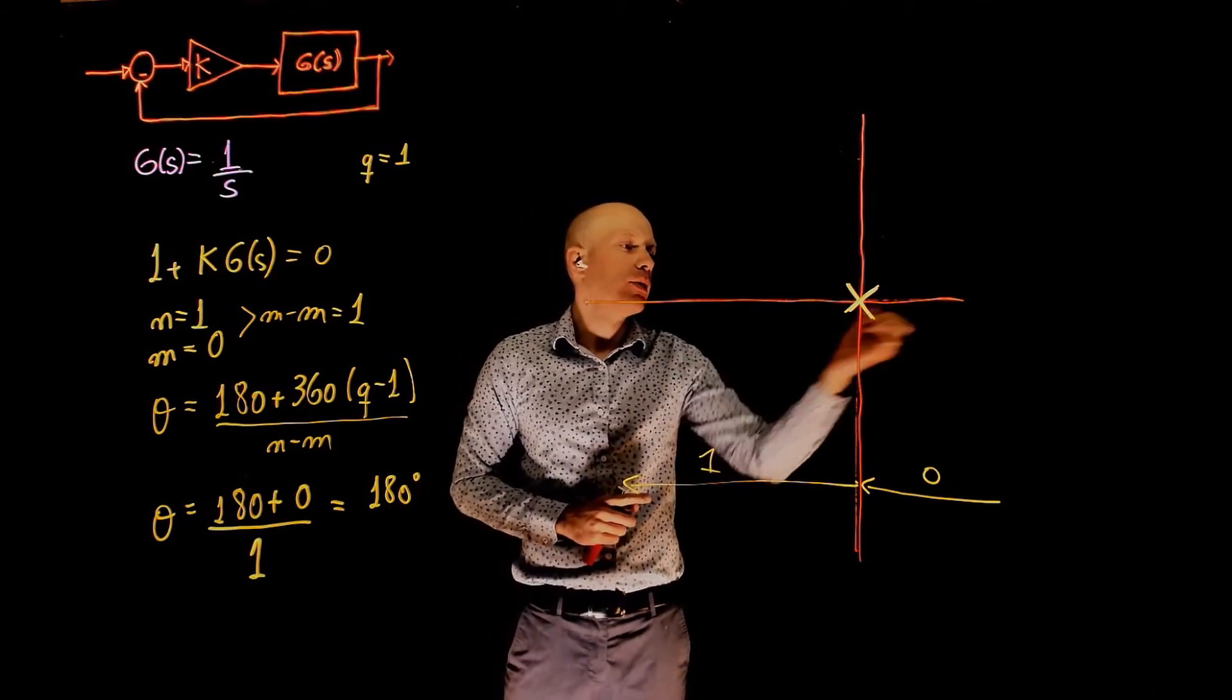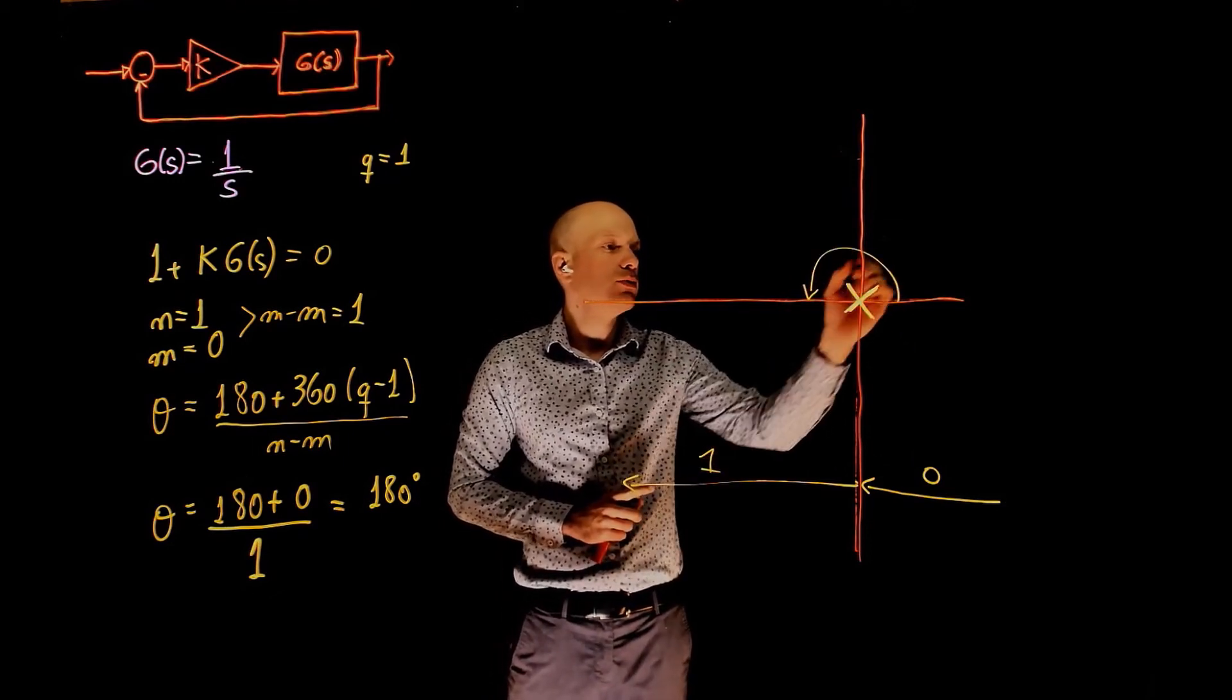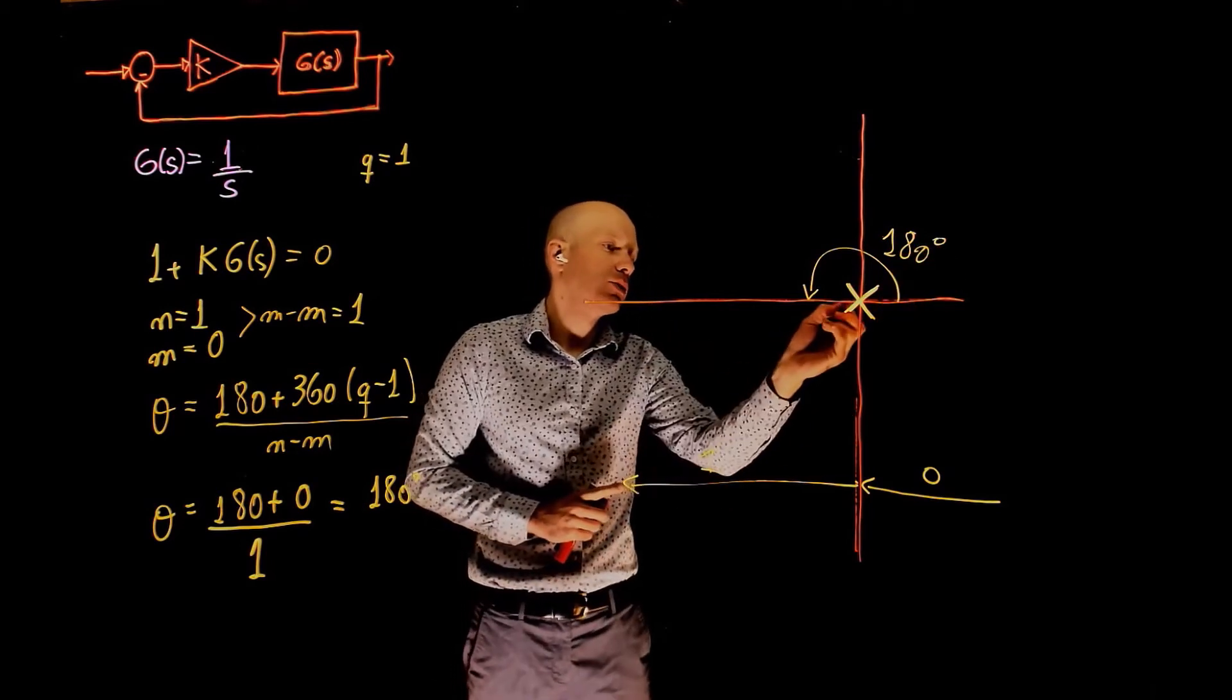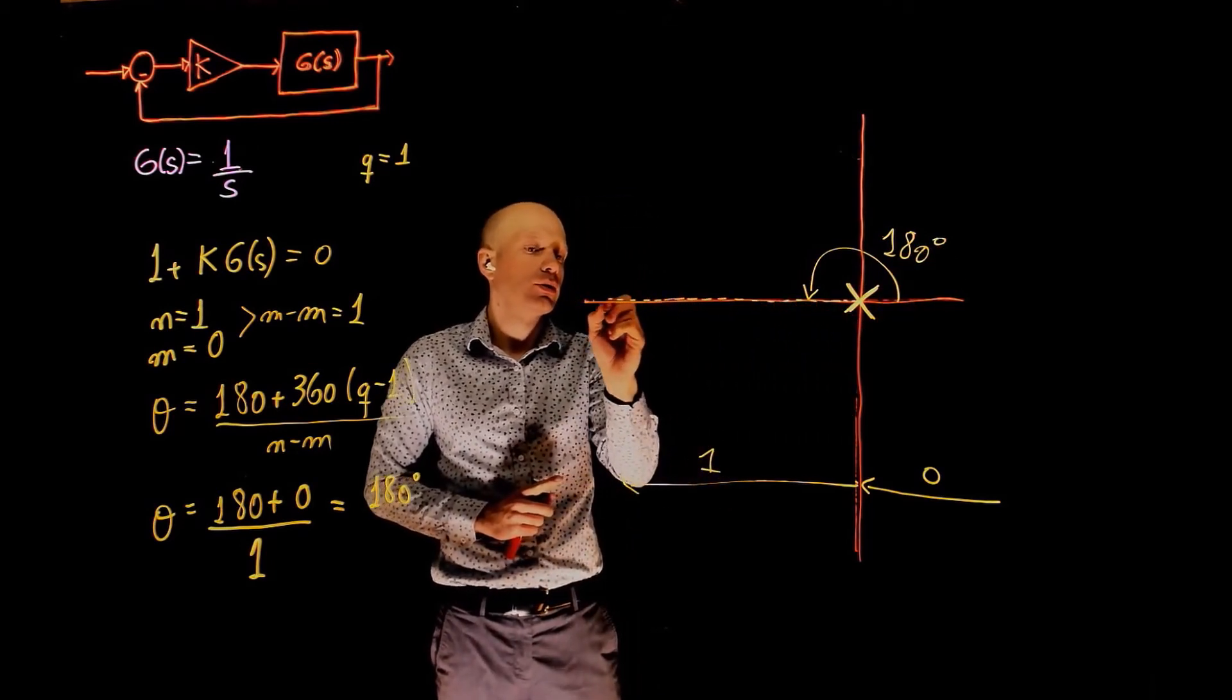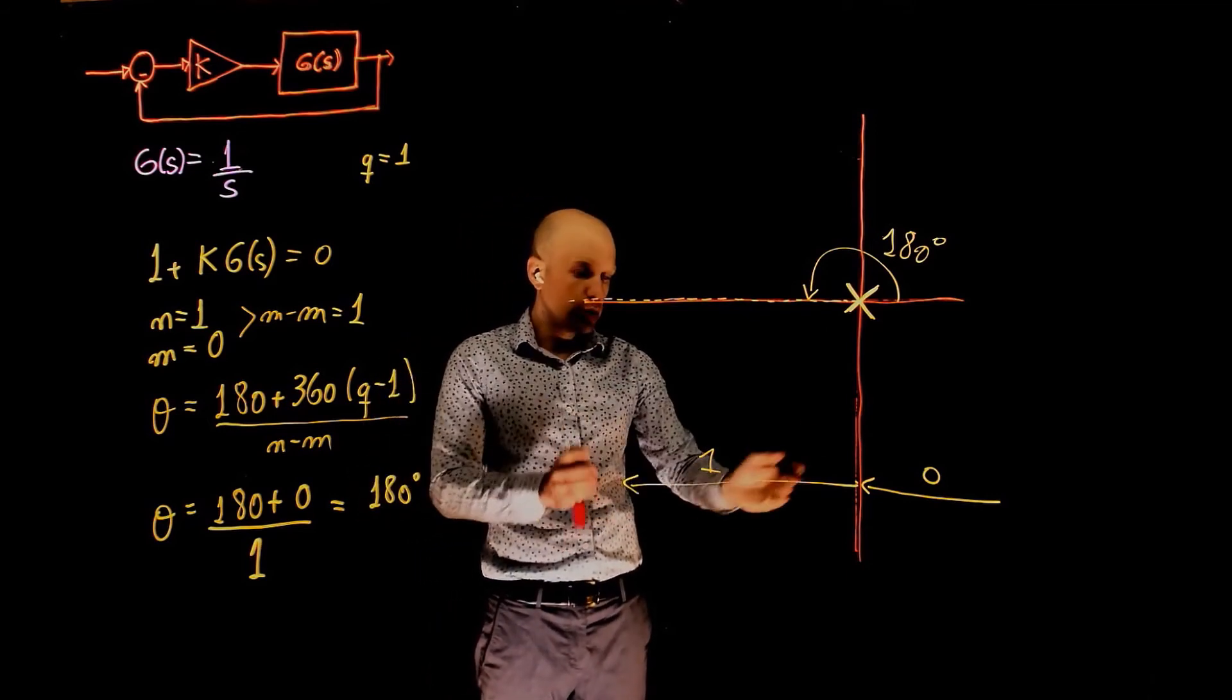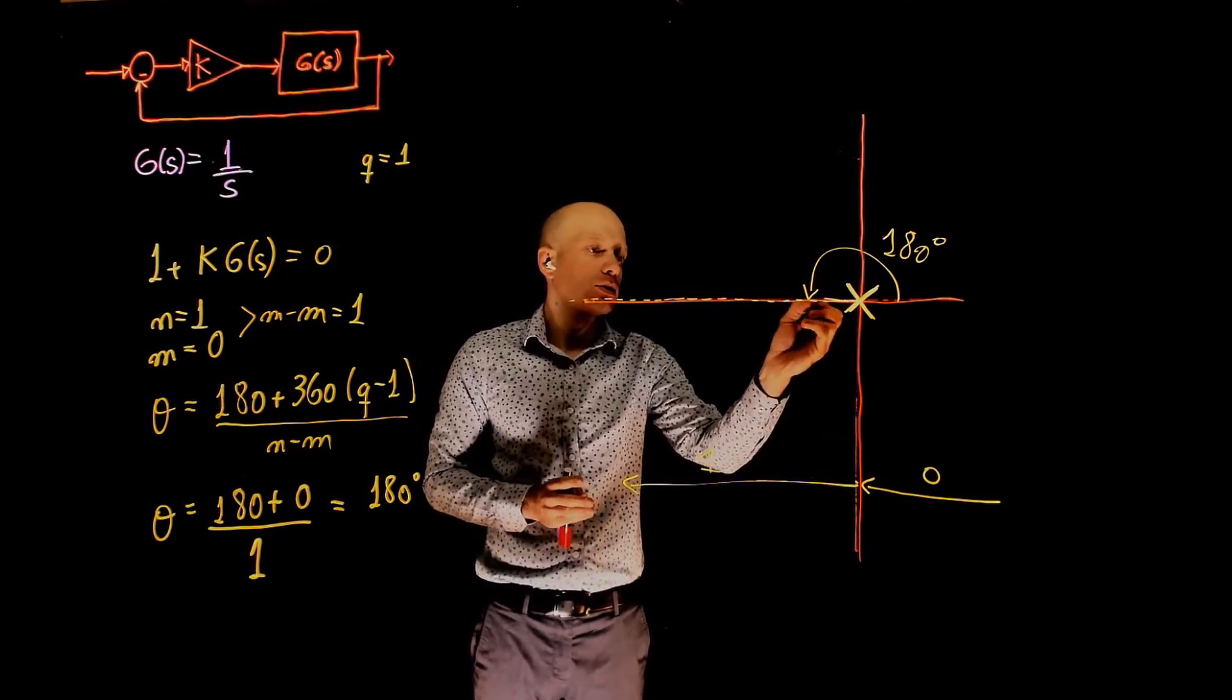So, starting from the positive real axis, 180 degrees would be right here, and the asymptote now needs to be along the negative real axis. We know that the root locus exists on this part of the axis as well.